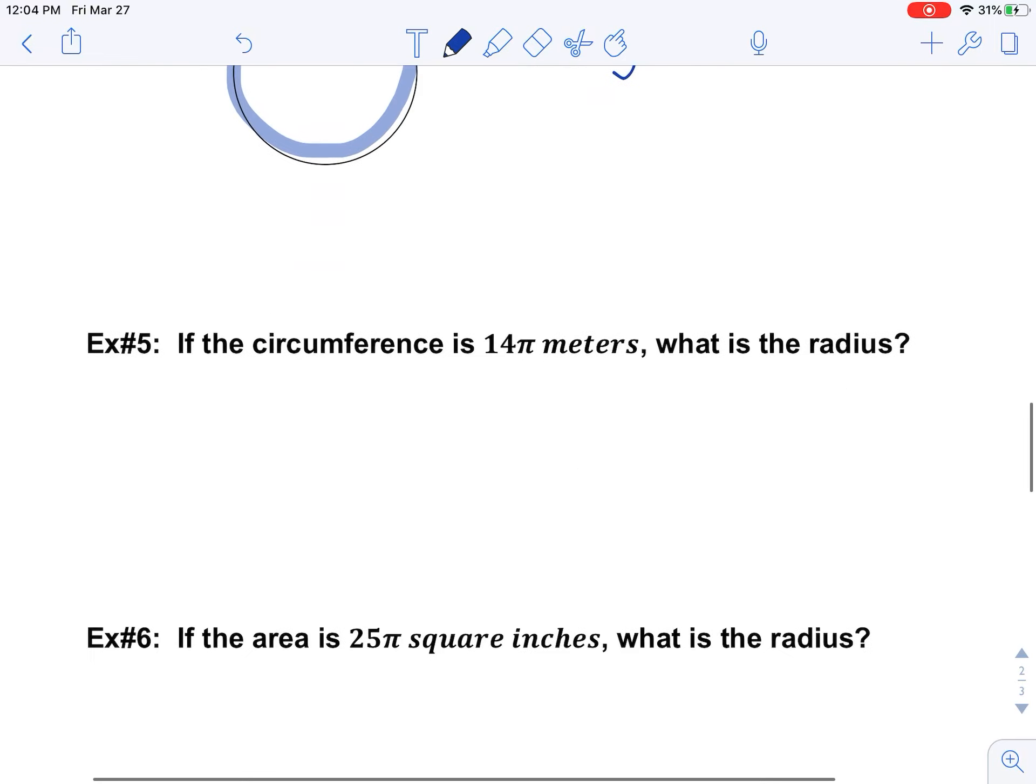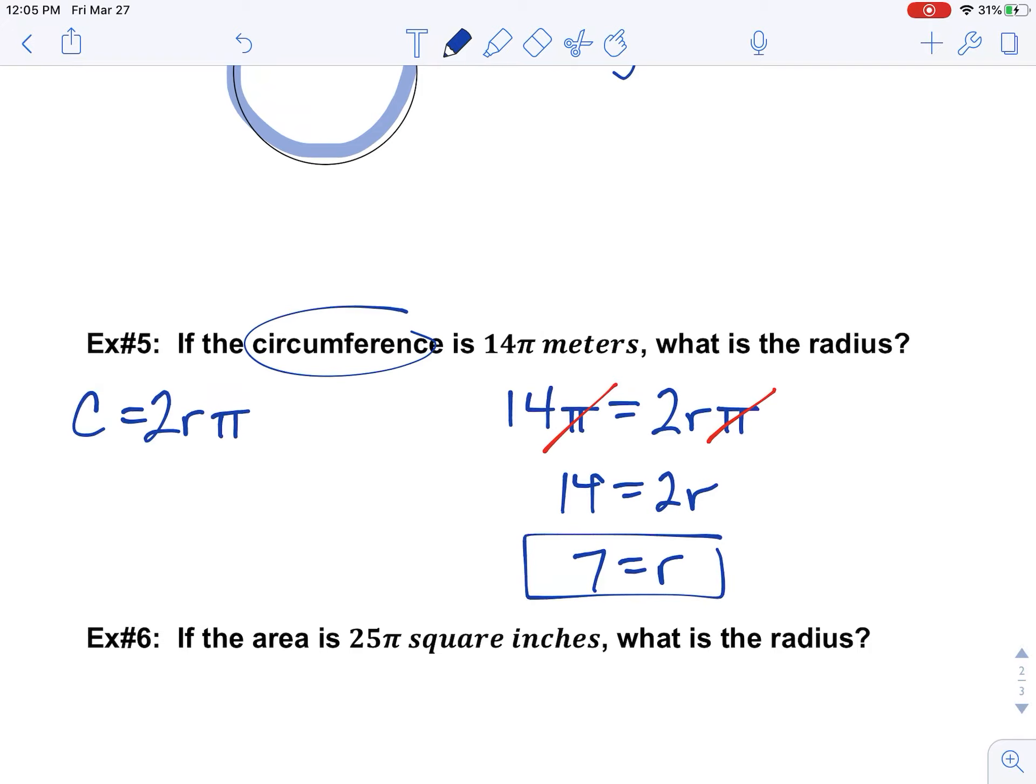All right, so moving on here, let's take this circumference and area formula to the harder versions of these problems. And these situations are going to give you the circumference or give you the area, and you have to discover what the radius is using some math. So for circumference, the circumference formula is 2rπ, and we're going to use that formula to do our problems. So 14π equals 2rπ. Well, what's nice about this is because they're both in terms of pi, you can just cancel out the letter pi. And now you have 14 equals 2r, and so 7 is the radius for this problem.